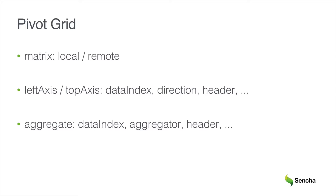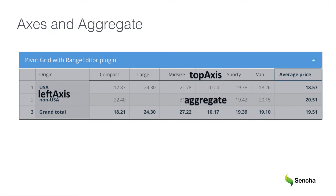Left axis defines what dimension should be used to aggregate data in rows, and top axis defines what dimension should be used to aggregate data in columns. Data index config parameter corresponds to field name, and the aggregate configuration parameter defines what data should be aggregated. The aggregator parameter defines aggregator functions: sum, min, max, or average. Left axis, top axis, and aggregate configuration parameters might also include normal grid column configurations like header, width, or styling. So, one more time: left axis corresponds to rows, top axis corresponds to columns, and aggregate defines the content of a pivot grid component.